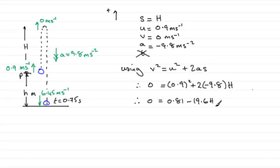Now add 19.6H to both sides and therefore we have 19.6H equals 0.81 and divide by 19.6 to both sides and you get H equals 0.04132 and so on. And if we give this to 2 significant figures, then therefore H equals 0.041 to 2SF. And don't forget the units, that'll be meters.